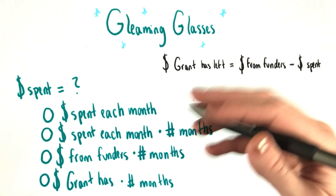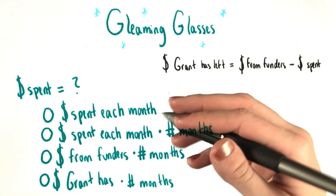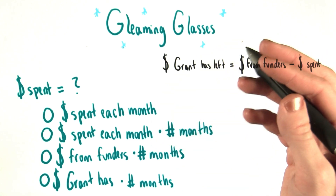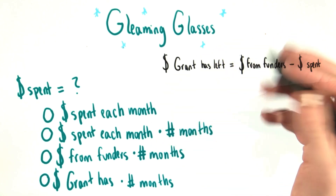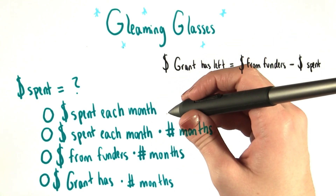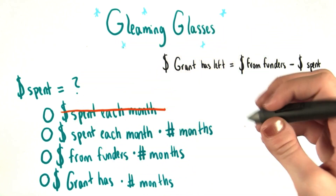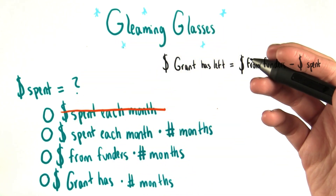For example, after one year, Grant will have spent way more money than he had after just one month of being in business. So that means that this first answer right here can't be right, because it doesn't involve time.